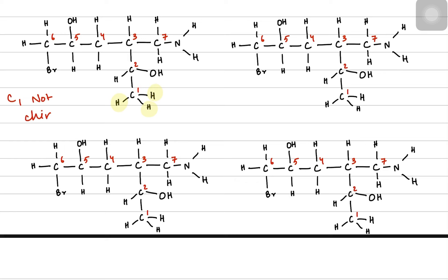So carbon 1 is not chiral. Let's focus on carbon 2. When you focus on carbon 2, you can notice that at the bottom it's bonded with H, another bond is the CH3 group, and the third is the OH. You can see: OH, H, H, CH3, and the fourth bond is this entire chain attached with carbon 3.